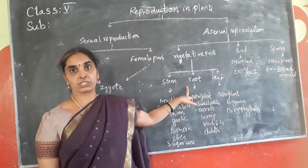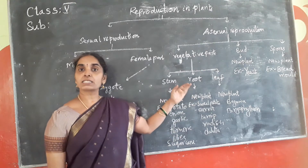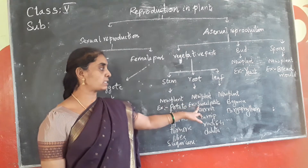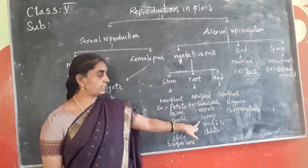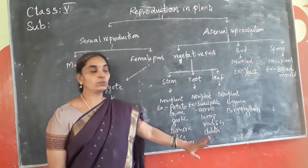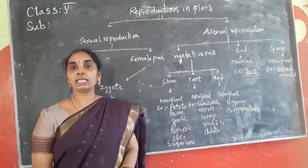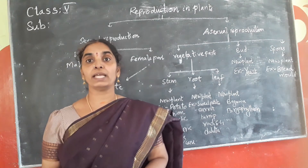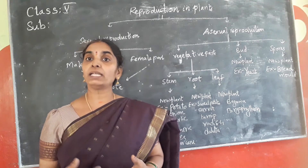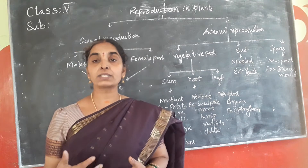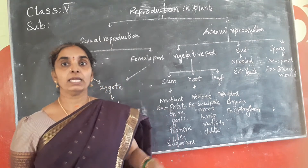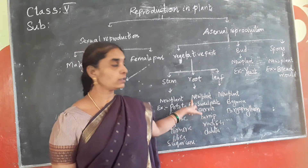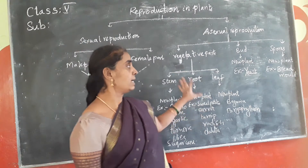Coming to the root modification, plants also give rise to new plants through their roots. Plants like sweet potato, carrot, turnip, radish, beetroot, and dahlia propagate new plants through their roots. So these are the examples for root modification.